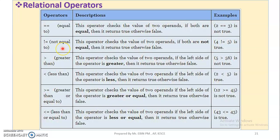Now, not equal to: if we are not equal to 5, this is true. This is the not equal to operator. Then greater than, less than, greater than or equal to, less than or equal to — these are all relational operators.